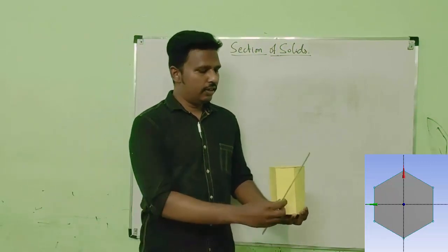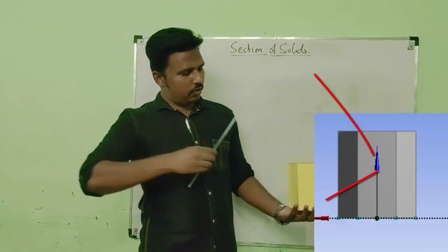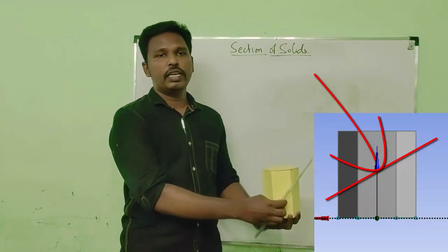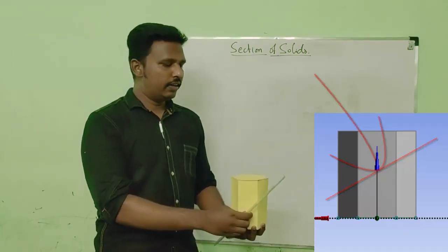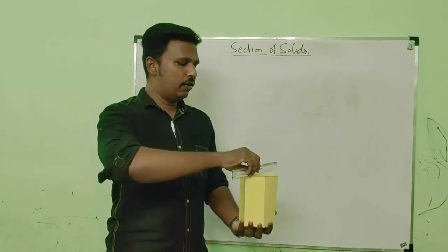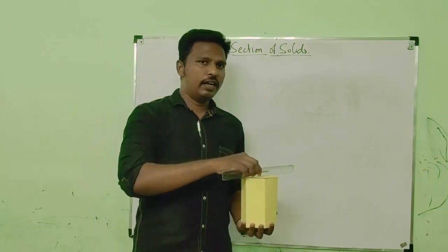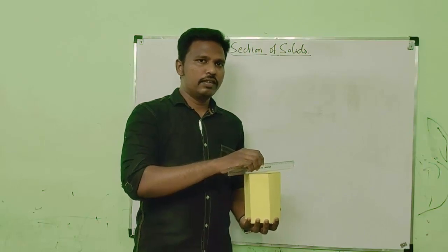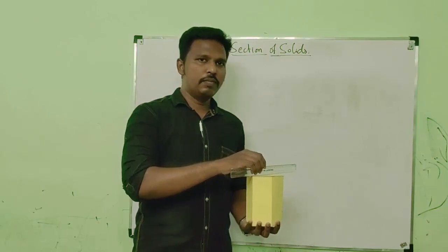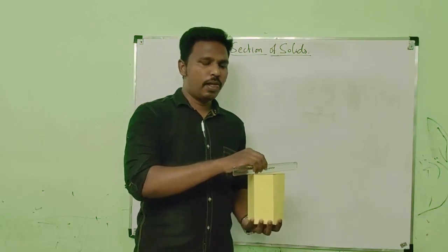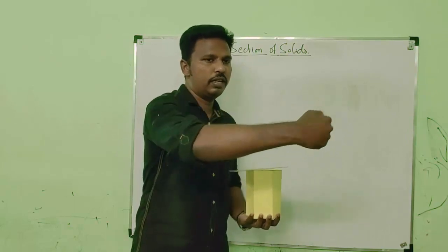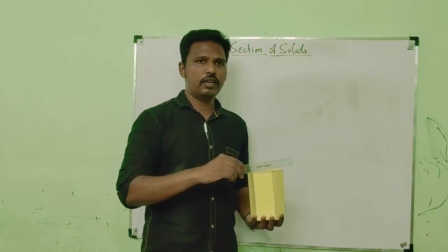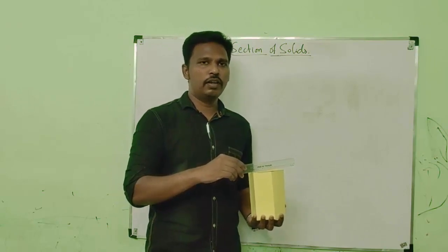To see the true shape, I have to view it in the orientation perpendicular to the cutting plane. Similarly, if the cutting plane is inclined to VP, I can see the section view from the front, but that view is not the true shape. So if I want to see the true shape of the section, I have to look perpendicular to the cutting plane. That is the basic concept. Let us see more in the problems.